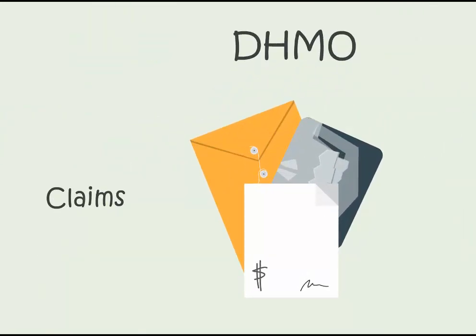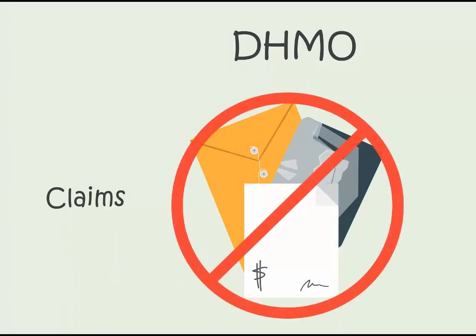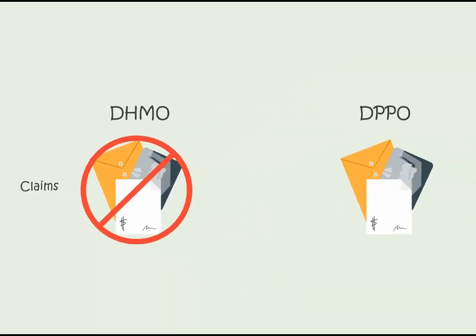Claims. On a DHMO plan you don't have to worry about filing claims — you simply pay your copayment for covered procedures and that's it. On a DPPO plan, once you use a network provider, he or she will file your claims for you. However, if you receive care from a non-network provider, you most likely will have to file your own claims.